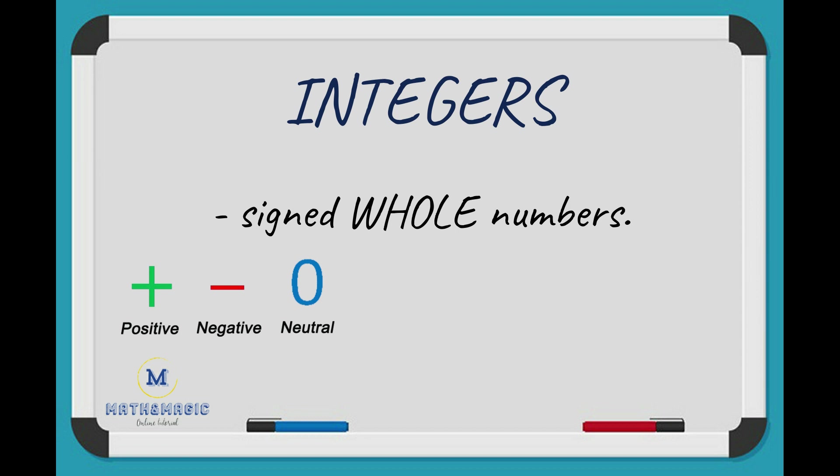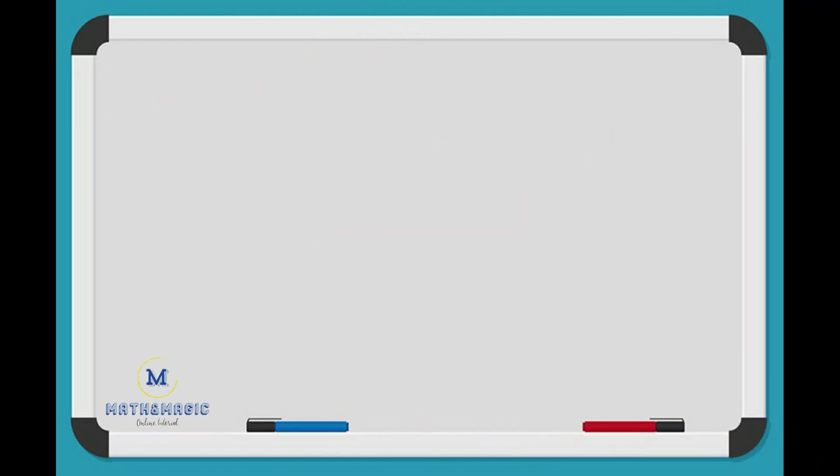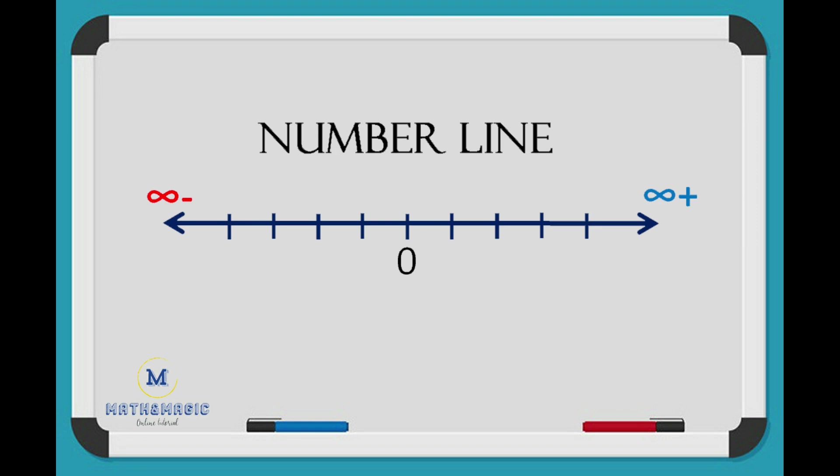Whole numbers, meaning there should be no decimal value, and numbers are not written in fraction form. Now illustrating integers in a number line, being zero at the center, all positive values are found on the right side of zero.